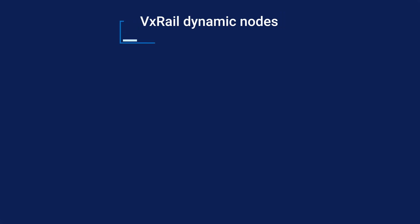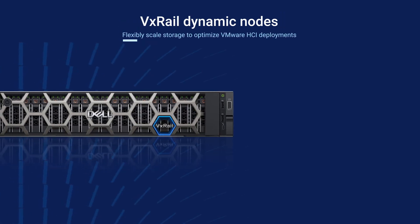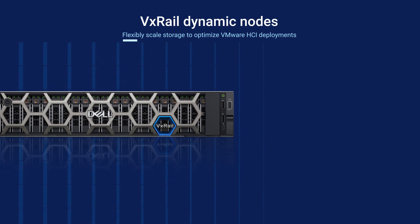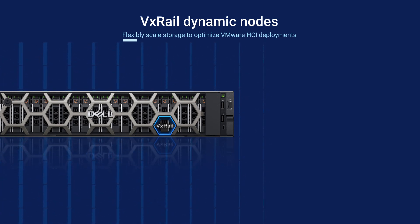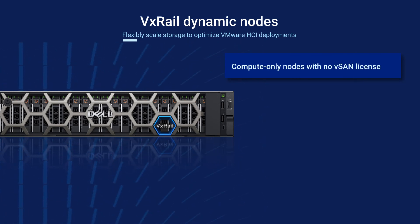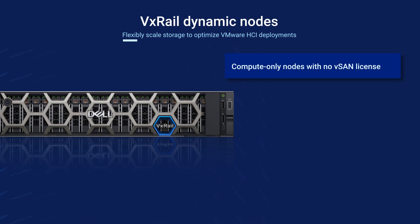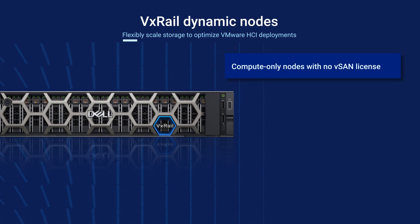VxRail Dynamic Nodes allow customers to add to their VxRail footprint to address increasing workloads while continuing to benefit from a common VxRail operating model for a simplified LCM experience. Dynamic Nodes are compute-only nodes — essentially ESXi hosts without storage. When combined, Dynamic Nodes form a vSphere cluster, with primary storage coming from an external host, making a vSAN license unnecessary.